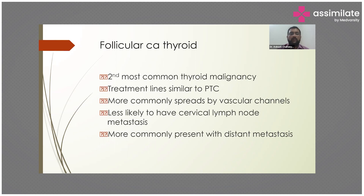First, I would like to start with follicular carcinoma of the thyroid, as it is the second most common after papillary carcinoma and treatment lines are more or less similar. The key difference is in how it behaves — it spreads more commonly by vascular channels compared to lymph node metastasis. In papillary carcinoma, as stage progresses you generally see lymph node metastasis before distant metastasis, but in follicular carcinoma you expect more distant metastasis compared to cervical lymph nodes.